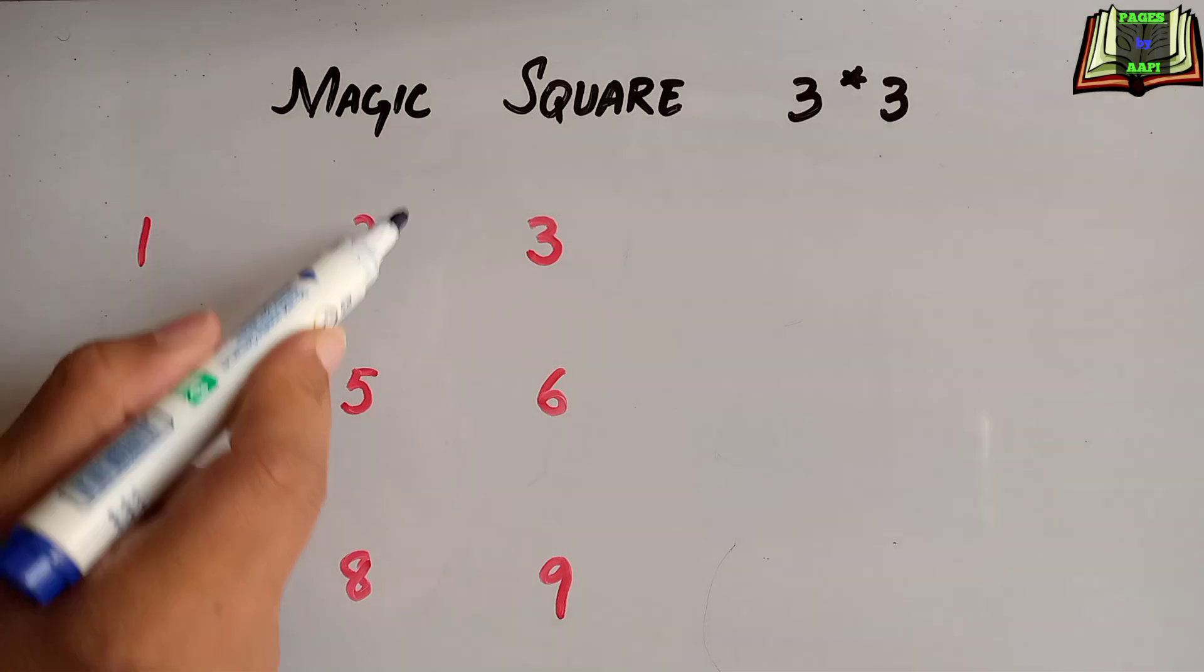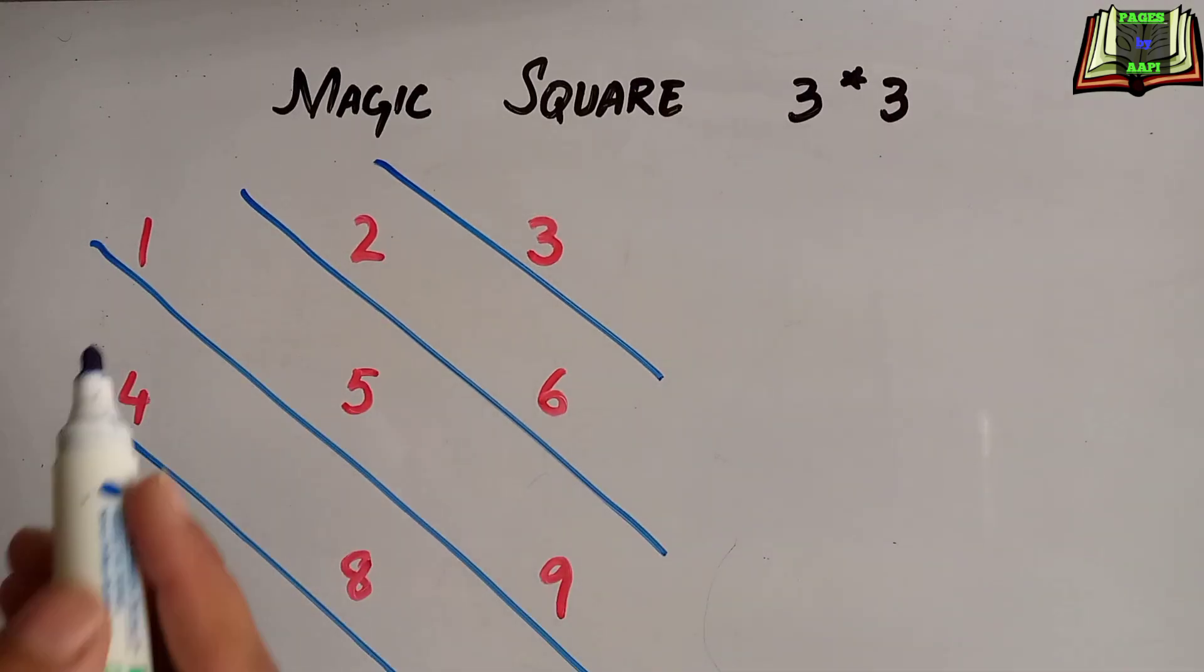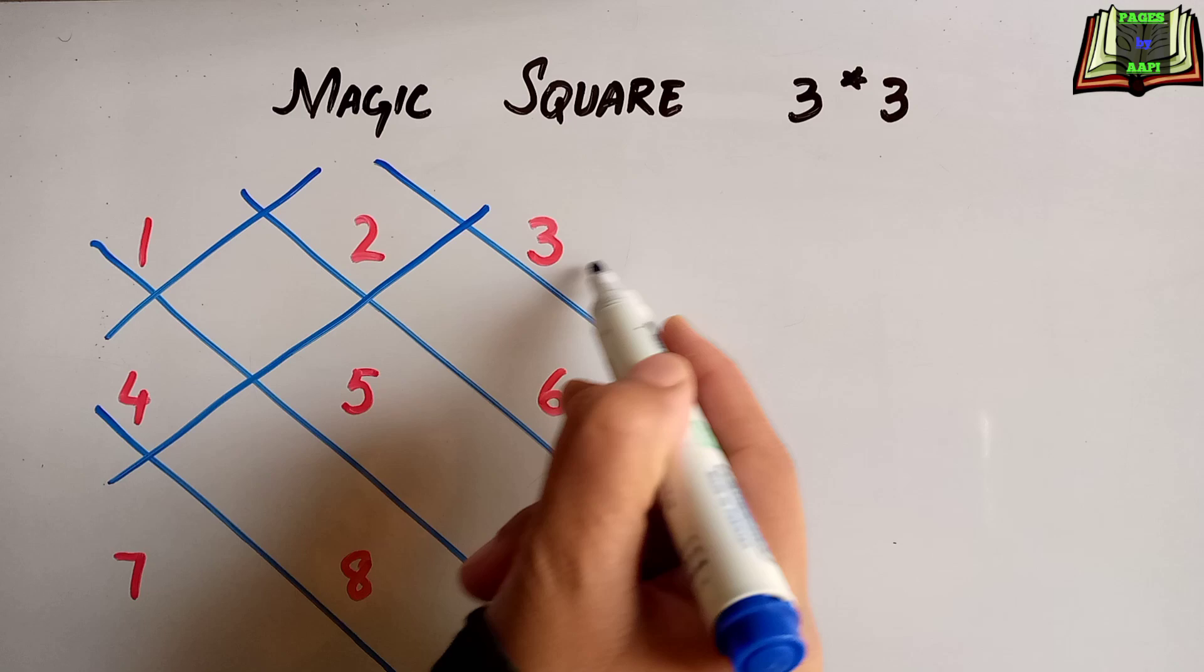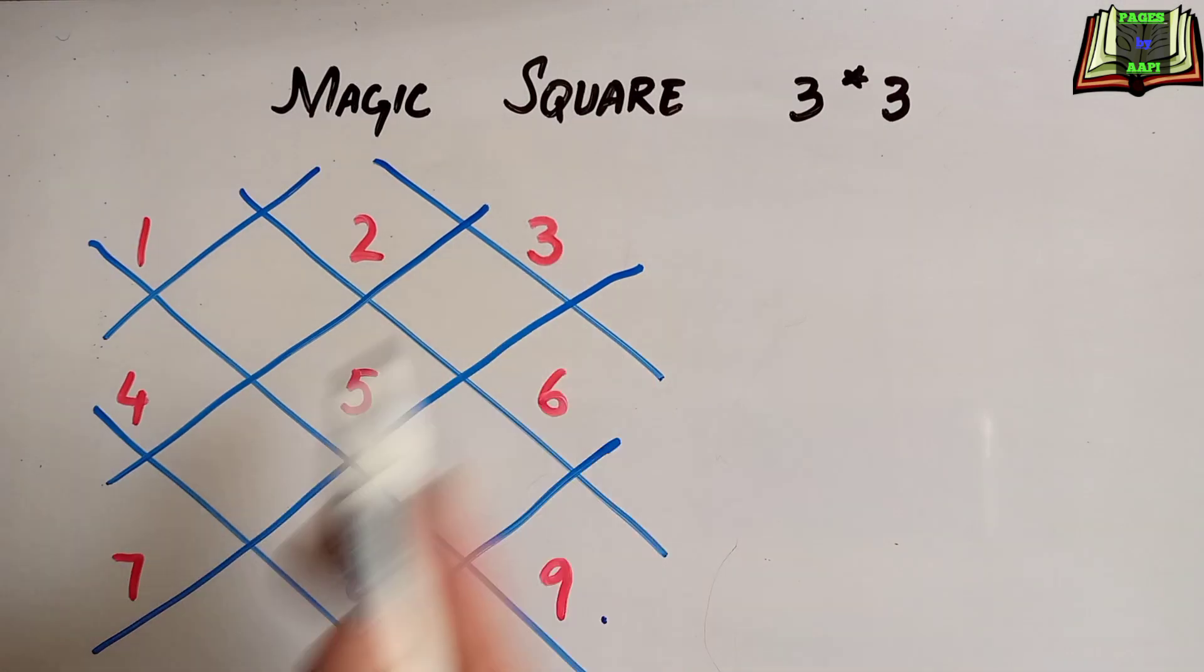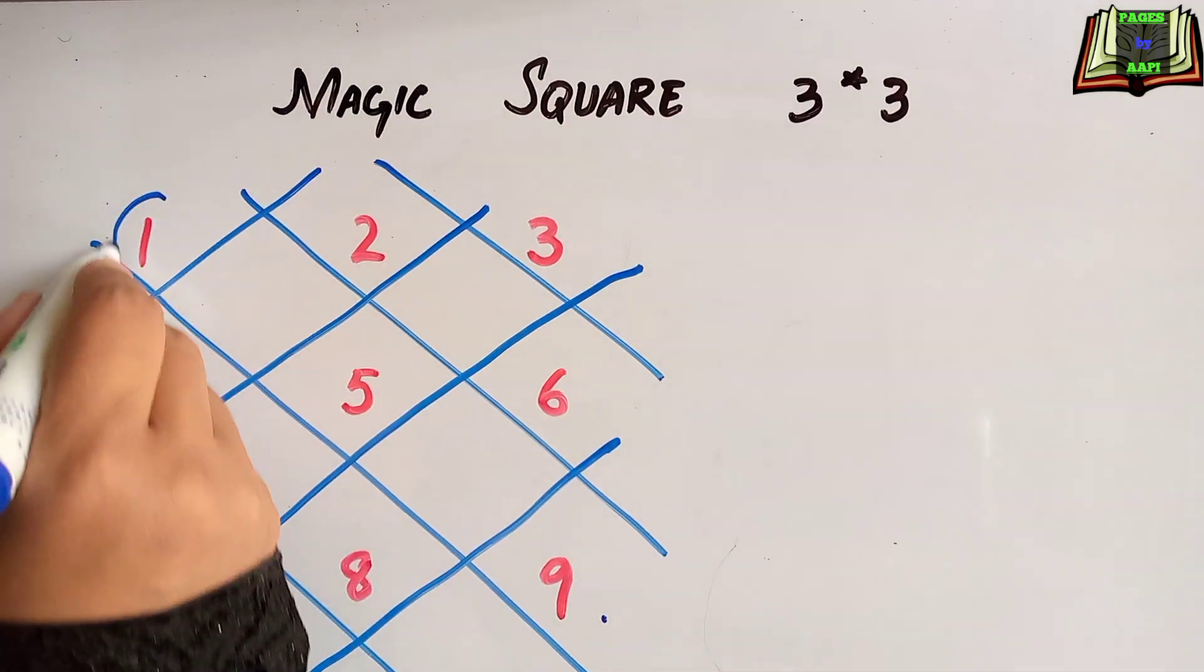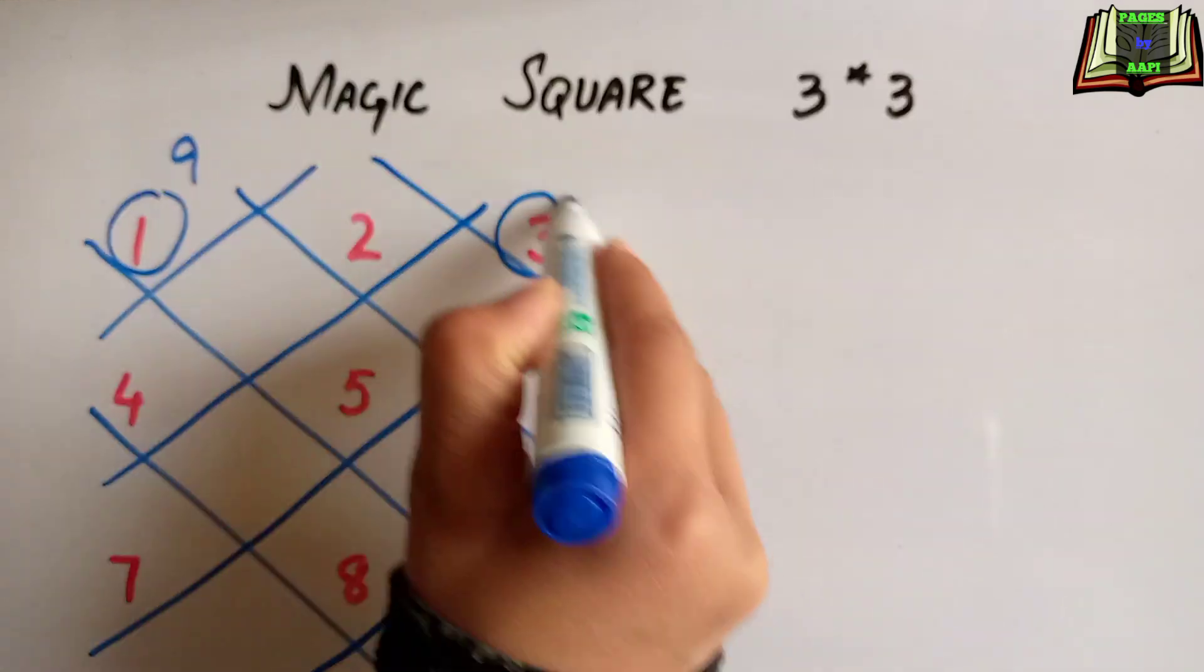For this, write the numbers from 1 to 9 in a row like I have written here. Then I am going to swap the numbers written at the corner. 9 will be swapped by 1 and 3 will be swapped by 7.